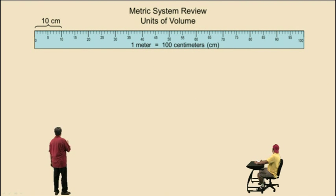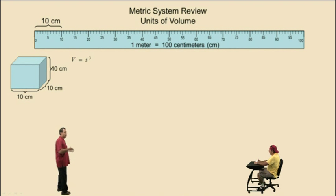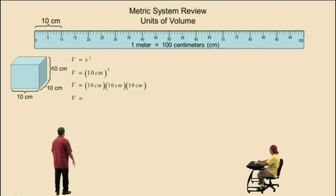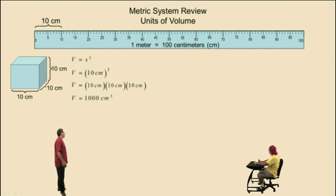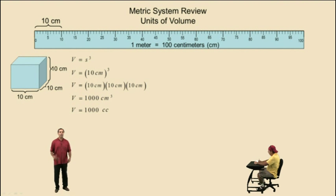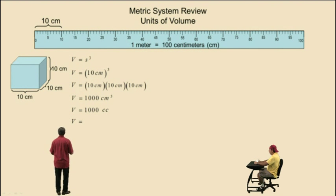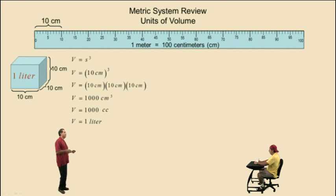Now let's look at volume again. Here's 10 centimeters, so this cube has a side length of 10 centimeters. Volume is side length cubed, so we have 10 times 10 times 10 centimeters, giving us 1,000 cubic centimeters. That can be written as 1,000 cc's. In the healthcare career field, they often use cc's as a measurement of volume — a cc is a cubic centimeter. 1,000 cc's is equal to 1 liter. That's what 1 liter is: 1,000 cc's.